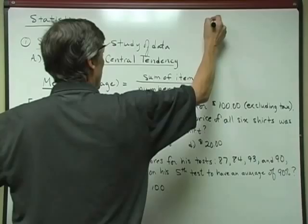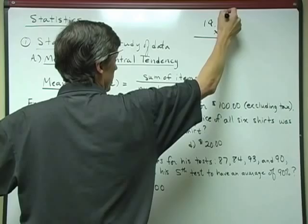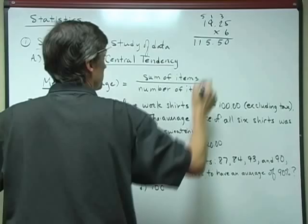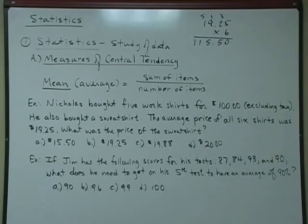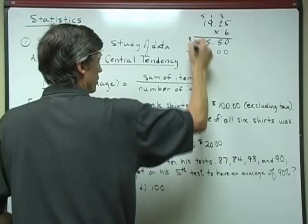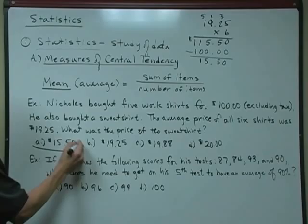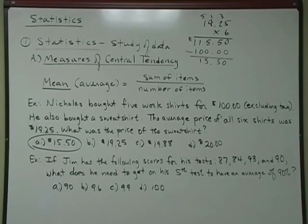So what I'm going to do here is I'm going to take the average price of $19.25, and I'm going to multiply it by six. That's zero, carry a three. That's 12 and three is 15, carry a one. That's 54 and one is 55, carry a five. That's six, that's 11 with two decimal places. And as you can see, all six shirts total $115.50. If I subtract the $100 that the first five shirts cost, the difference here of $15.50 would be the price of that sixth shirt, which was the sweatshirt, and that's answer A.